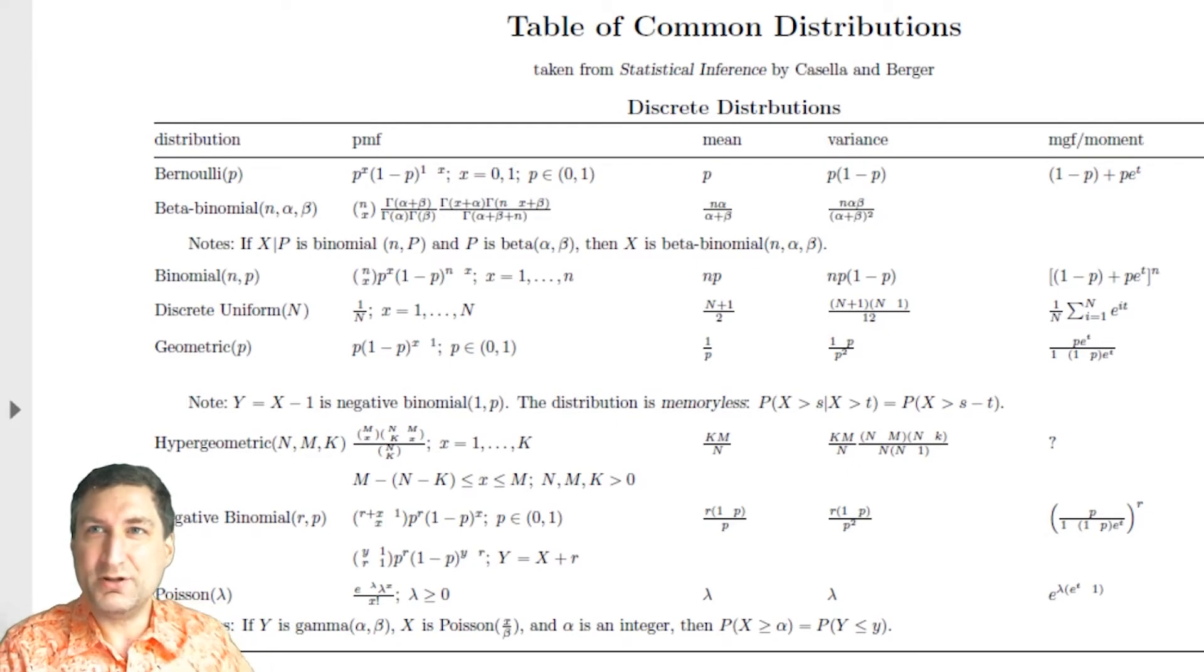So here, this is a table of common distributions. We just computed that the Bernoulli had mean p, and I computed it had variance p times (1 minus p). We were talking about the geometric. This is what I just derived. Well, I didn't derive this, I just told you this is what the answer was.